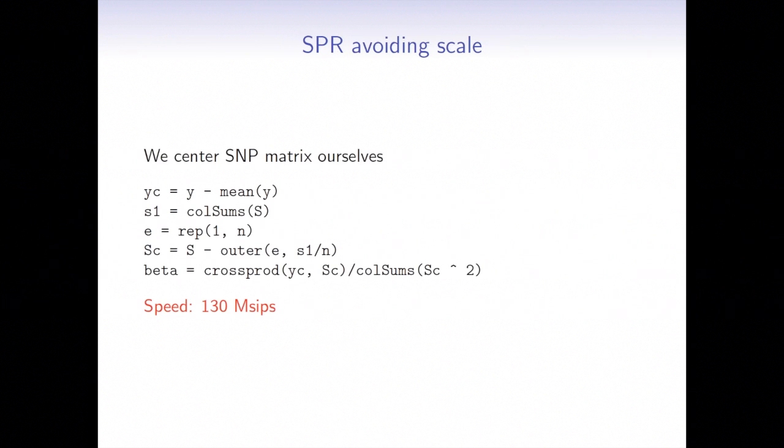So what we wanted to do, we wanted to avoid that function. So in the next step, we centered the SNP matrix ourselves. So we just subtracted the averages column by column using the outer function. And here we calculated the betas. And the speed increased to 130 mega-sips.